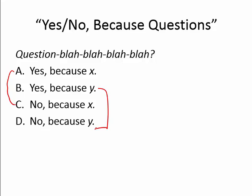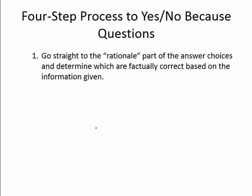A lot of students spend a lot of time reading and rereading questions of this type because they tend to be longer and include a lot more information than some other questions you will face. But you just don't have that kind of time on the ACT. So instead, this video is going to walk you through a four-step process to tackle these types of questions. Step one is to go straight to the rationale part of the answer choices and determine which are factually correct based on the information given.